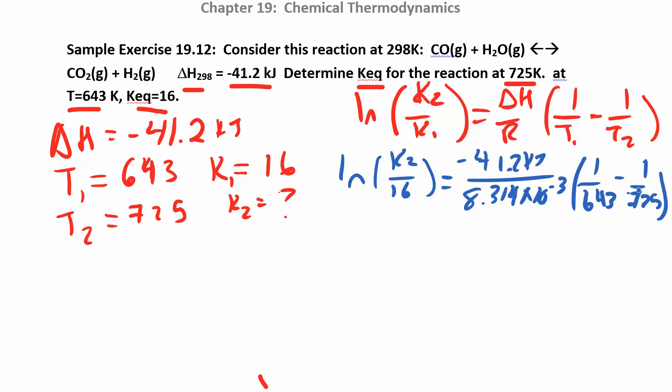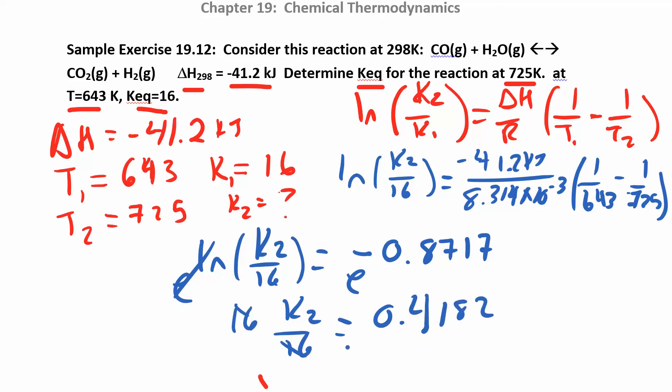Take some time to work all that out and simplify. It might take you a couple of times to get the same answer. Do this step first, and then multiply by this. Do it in baby steps and you'll be fine. So I got negative 0.8717. I'm going to take the E of both sides. So I end up with K2 over 16 is 0.4182. And then I'll multiply both sides by 16 to solve for K2, which ends up being about 6.7. And there's no units on your equilibrium constant.